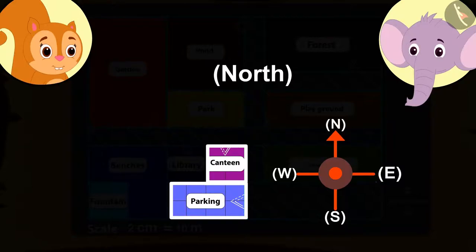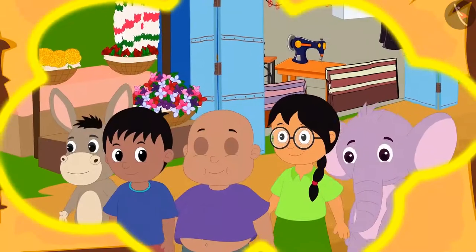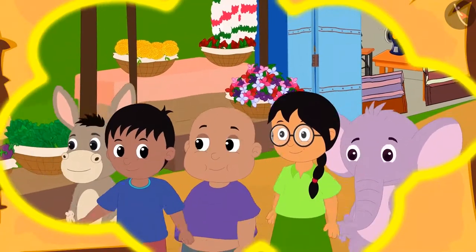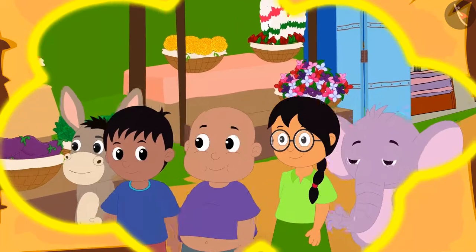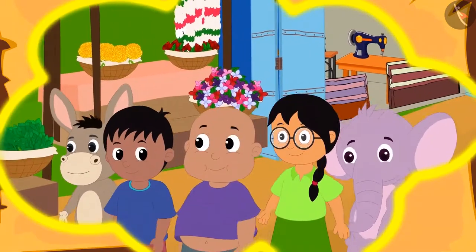Kids, can you see the compass that is made on the map? Everyone walked towards the north and reached the canteen. There they had some delicious food.